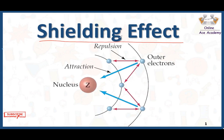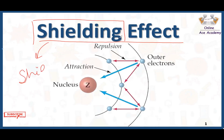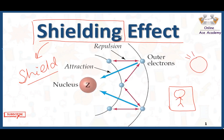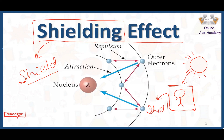Shielding effect, as the name indicates, is something used to shield the effect of another thing. For example, we have a room; inside the room we have a person, and outside the room we have the sun. This person inside the room is shielded from the sun rays just because of the walls of the room. The walls are acting as a shield here.